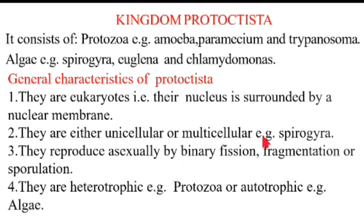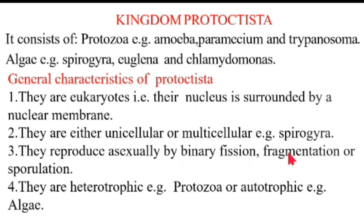A good example of multicellular Protoctista is Spirogyra. Number three, they reproduce asexually — that is, by means of budding, fragmentation, sporulation, or by binary fission. So the modes of asexual reproduction include binary fission, fragmentation, and sporulation.